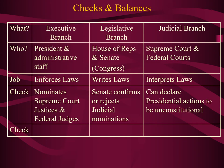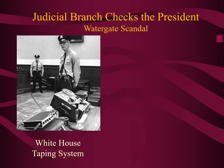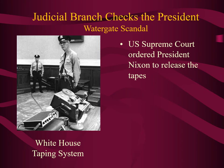The judiciary can also check the actions of both the legislative branch and the executive. For example, the judiciary can declare presidential actions to be unconstitutional. In the 1970s, during the Watergate scandal, it was learned that President Nixon had a taping system at the White House, yet he refused to give up those tapes. In a unanimous decision, the United States Supreme Court ordered the president to hand over those tapes.